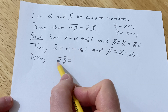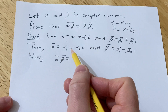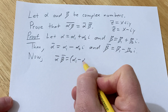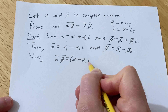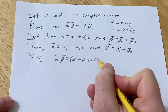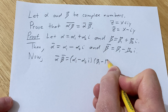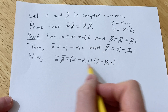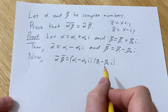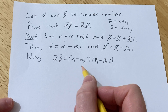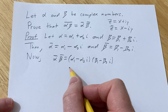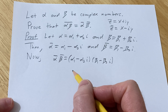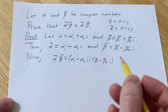We replace the conjugate of alpha with what we have: (alpha₁ minus alpha₂·i), and the conjugate of beta is (beta₁ minus beta₂·i). Now we have to multiply this out. We can do it in steps — I'll go ahead and do it in steps.